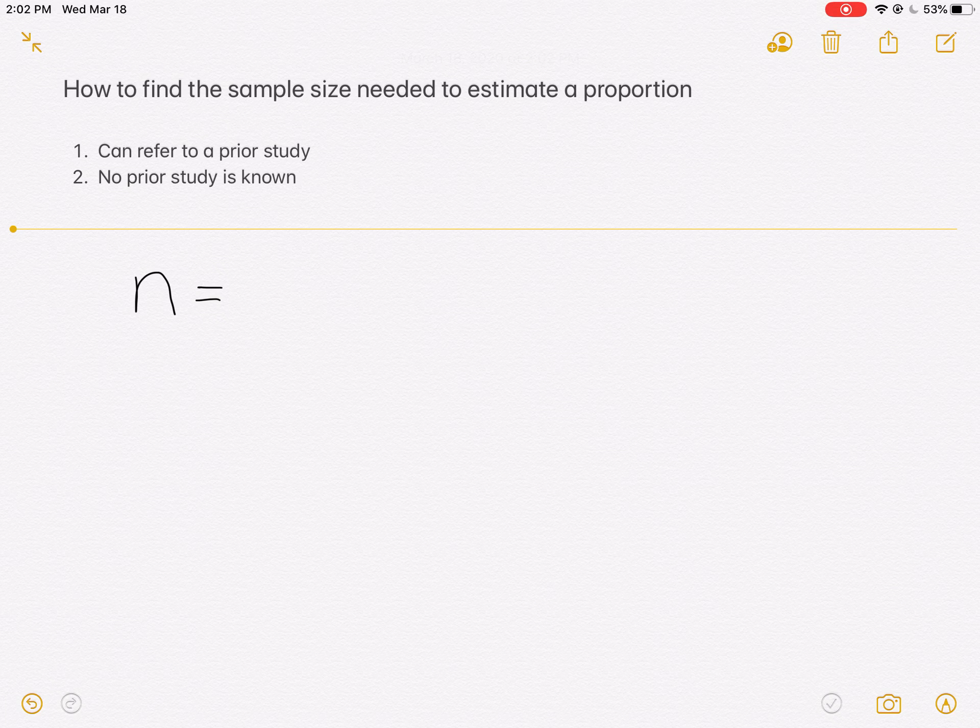If in a question they said, what's the sample size necessary in order to estimate a proportion or a mean? You're going to be looking for an n equals formula. And the one for the proportion is going to scream to you, I'm the one for the proportions because it's going to have p's and q's in it. The one that's for the mean is not going to have p's and q's in it.